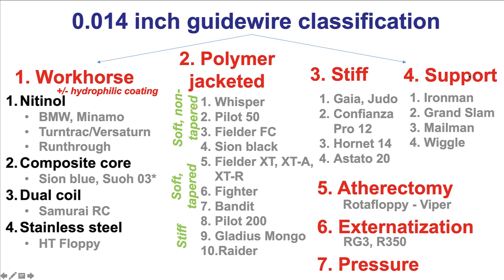Category number four are the support wires — wires that have a very soft tip but a very stiff and supportive body, used for delivering equipment in complex PCI. Category number five are atherectomy wires. Atherectomy cannot be done over standard 0.014-inch wires; instead there are thinner wires such as the Rotafloppy at 0.009 inch and the Viper at 0.012 inch. Category number six are the externalization wires — the RG3 and R350 — specific for CTO PCI, being 330 to 350 cm long wires designed for retrograde CTO PCI. And finally, category number seven are the pressure wires used for coronary physiology.